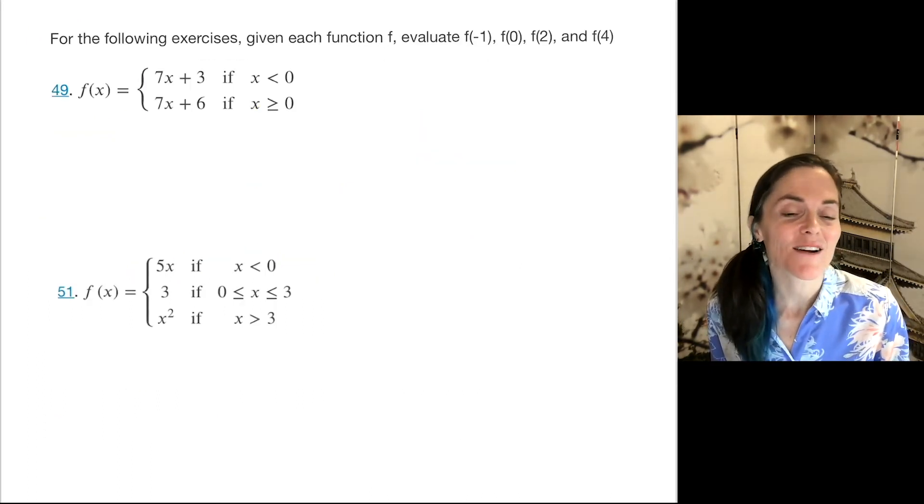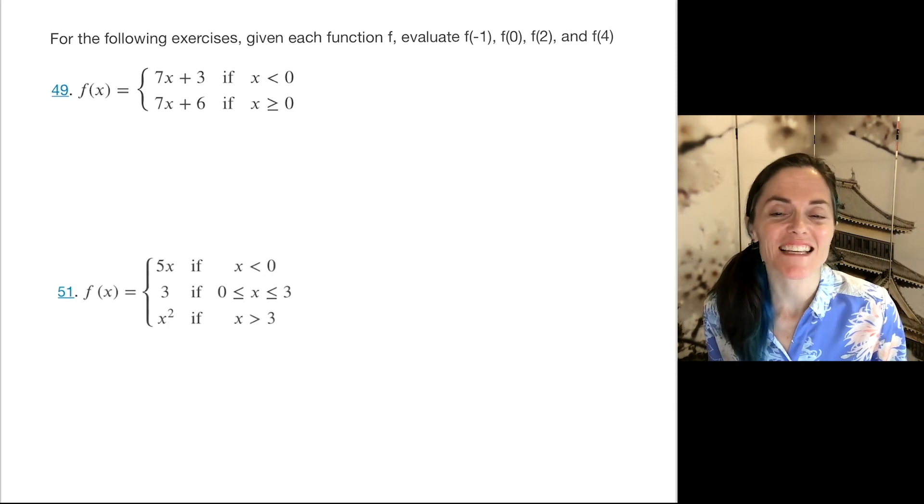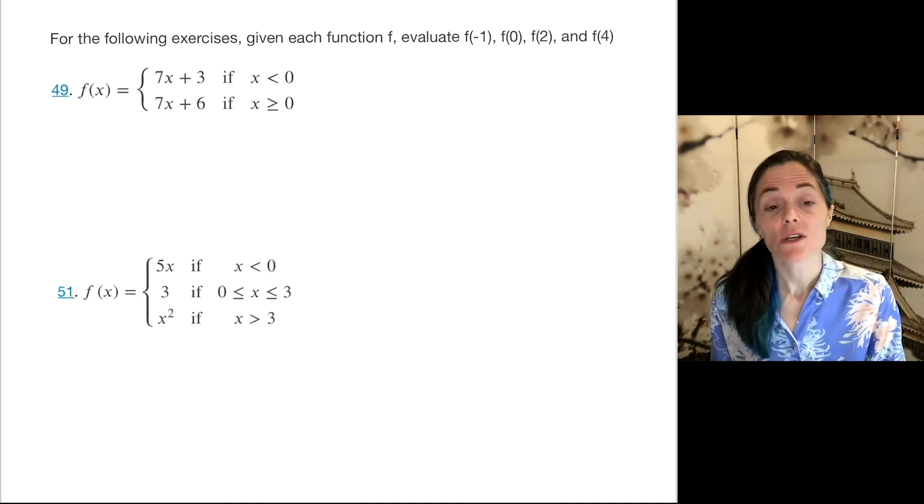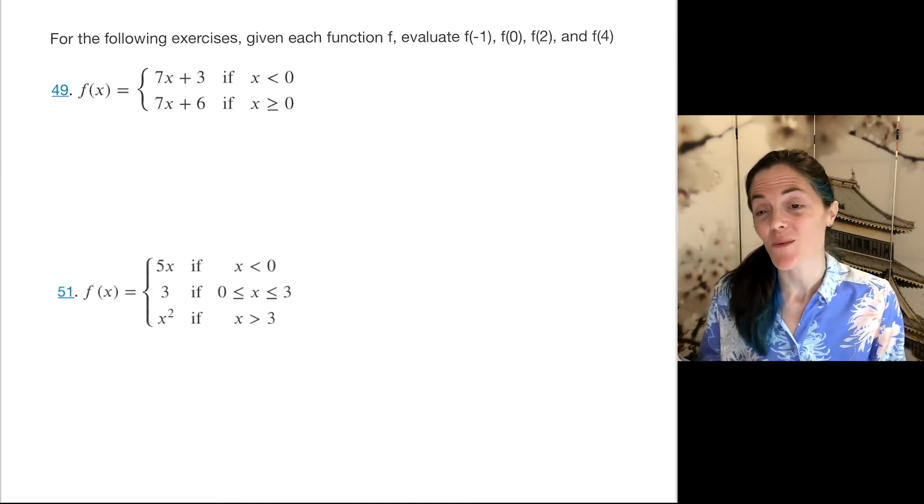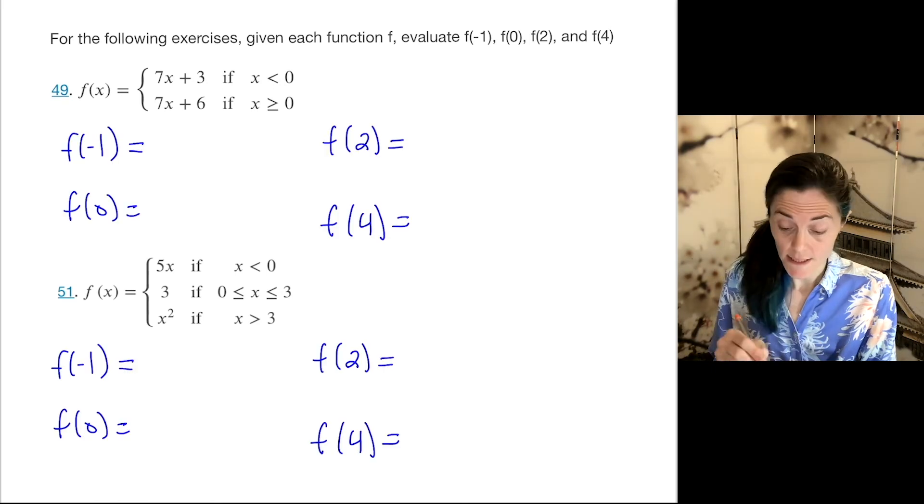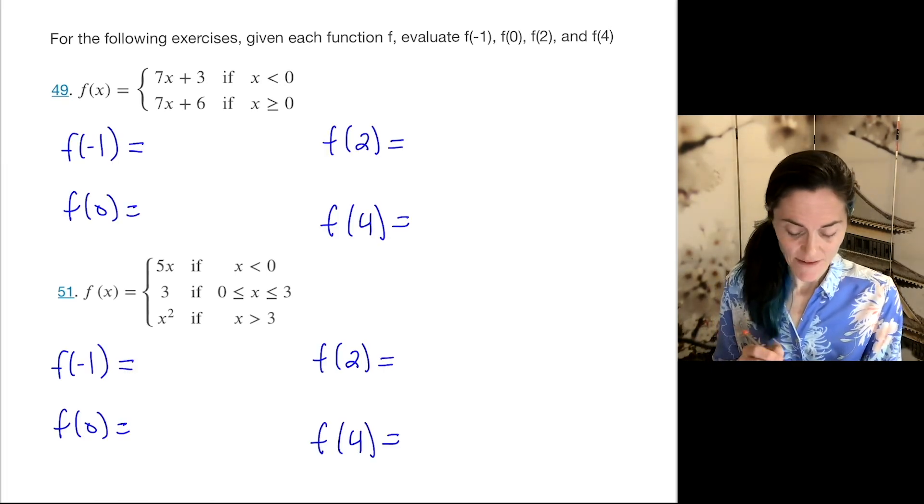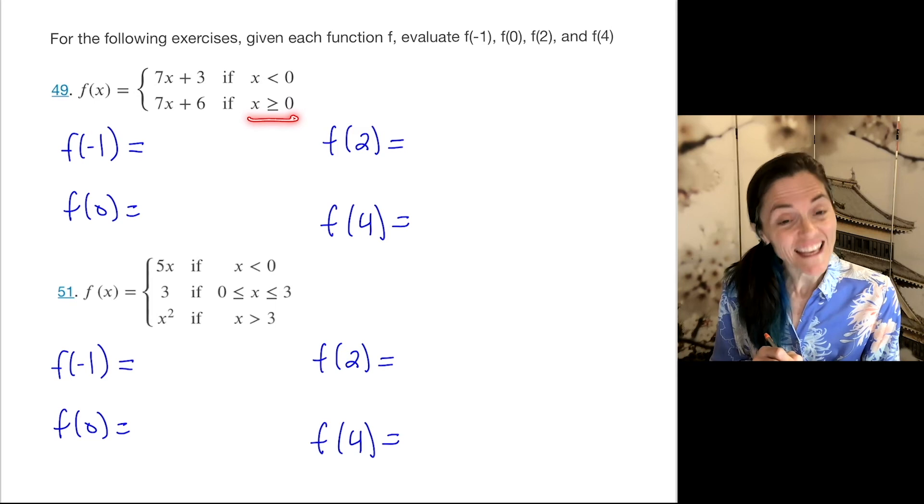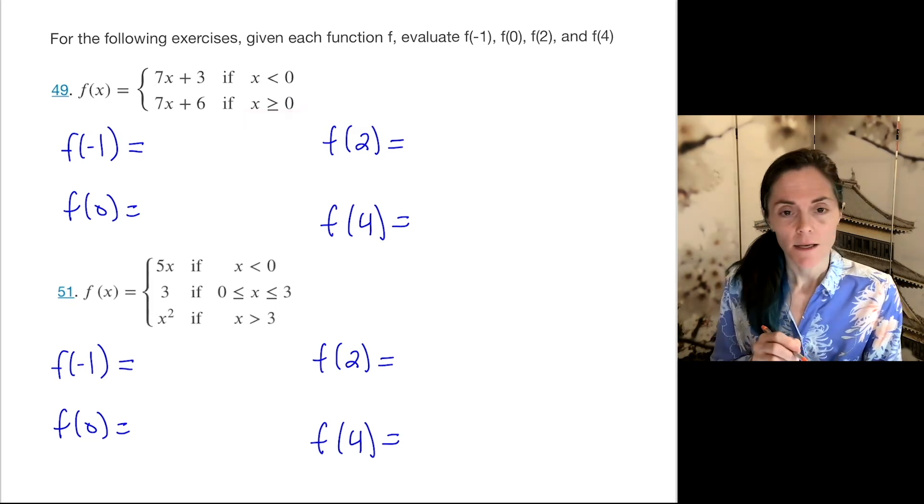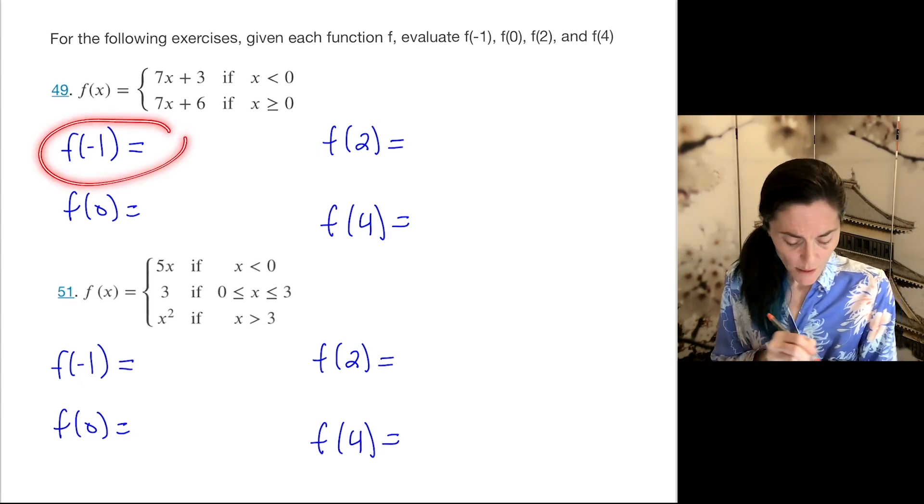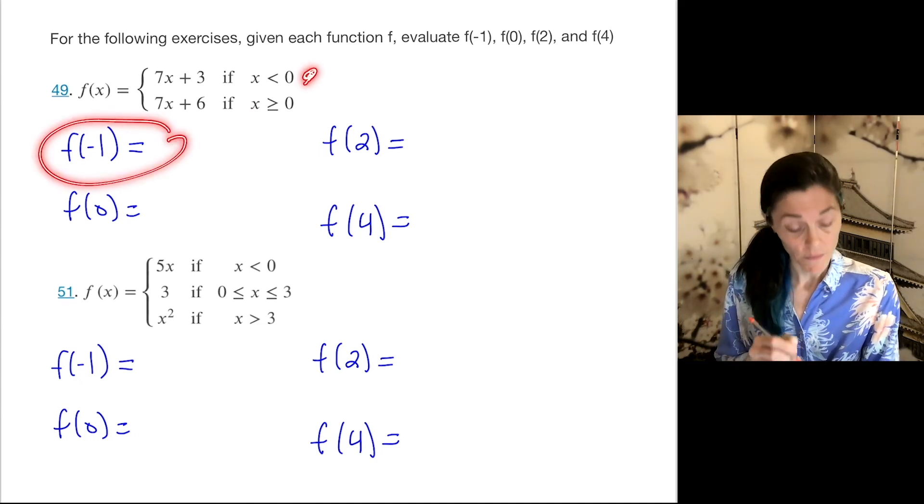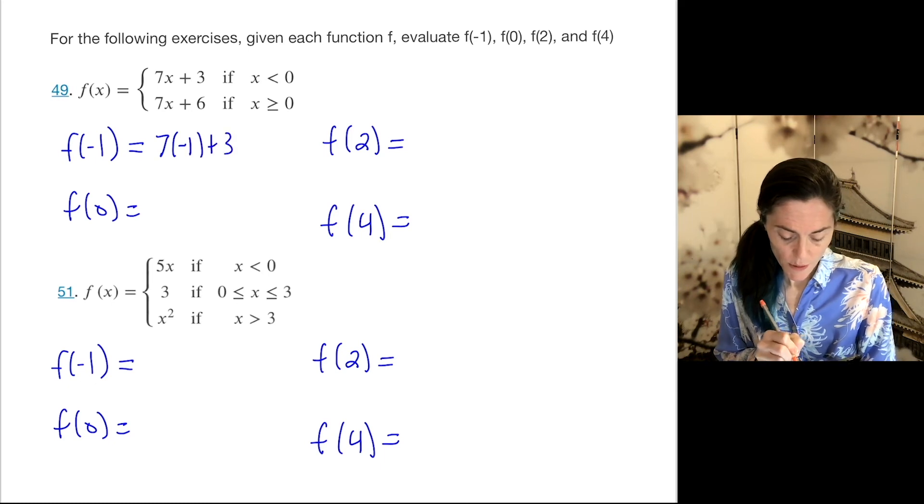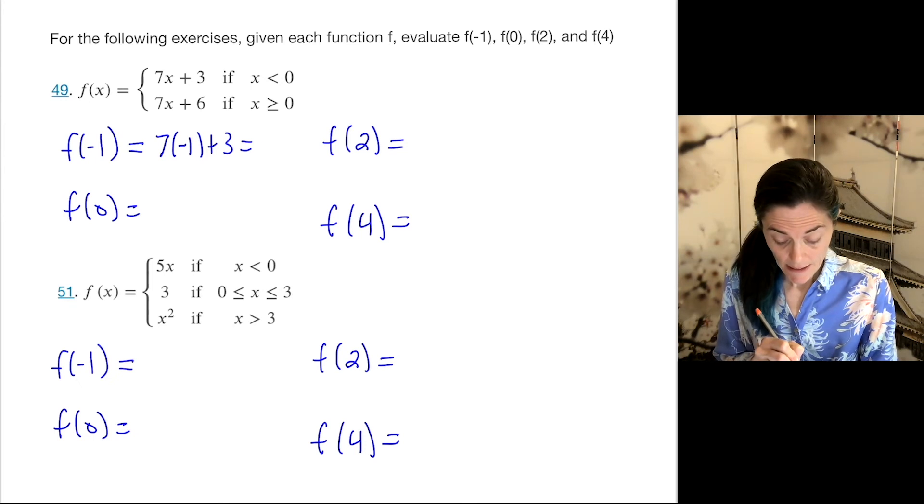Now the last two questions are evaluating piecewise defined functions. And we practiced this some in the lesson, but it's great to practice more in these exercises. So for each one, 49 and 51, we want to evaluate f(-1), f(0), f(2), and f(4). Now we have to think about this piecewise definition. So here, if x is less than 0, the function is 7x plus 3. And if x is greater than or equal to 0, the function is 7x plus 6. Well, this is the only one in this interval where x is negative. Let us evaluate f at minus 1. We get 7 times minus 1 plus 3. This is negative 7 plus 3, we get negative 4.